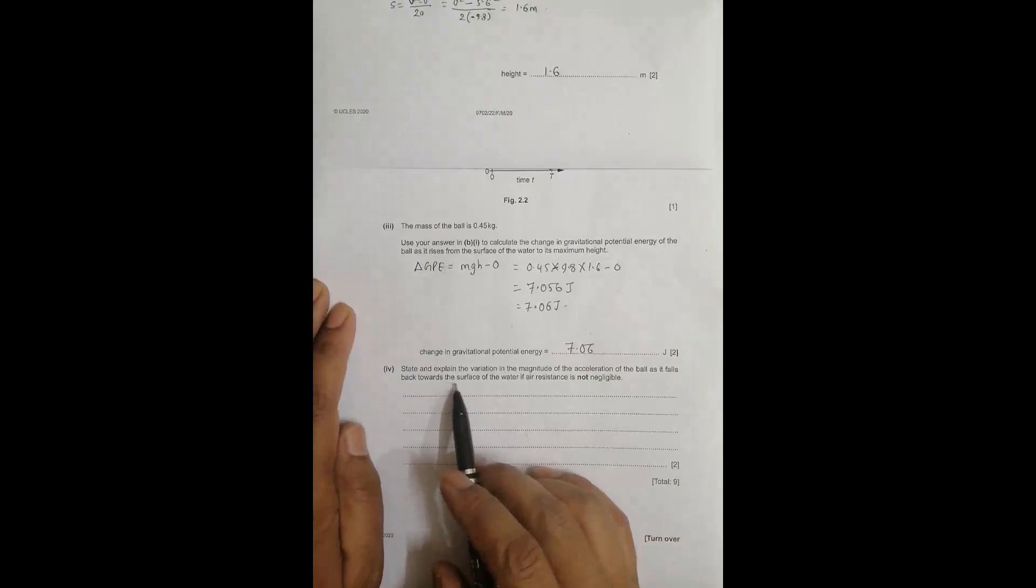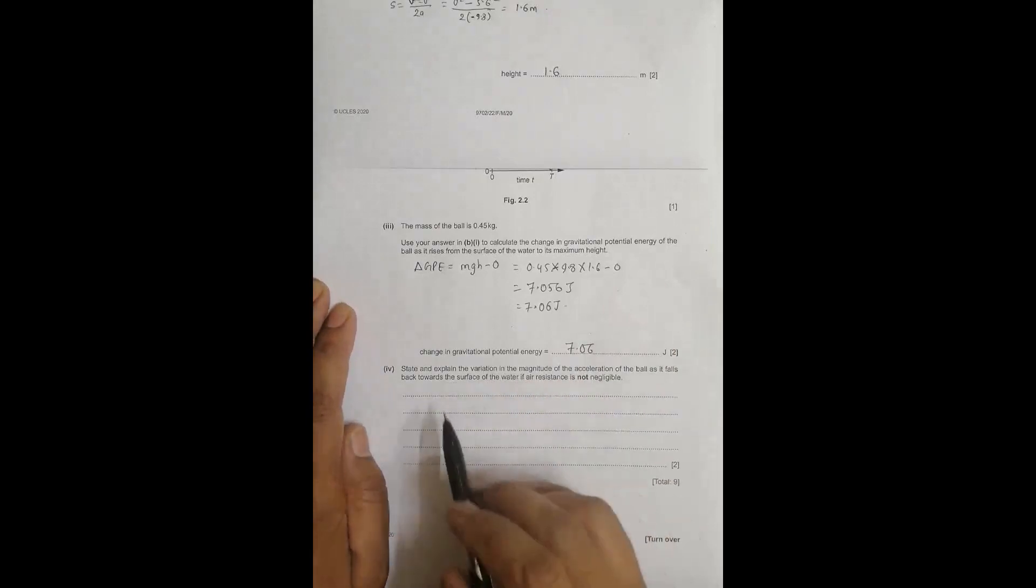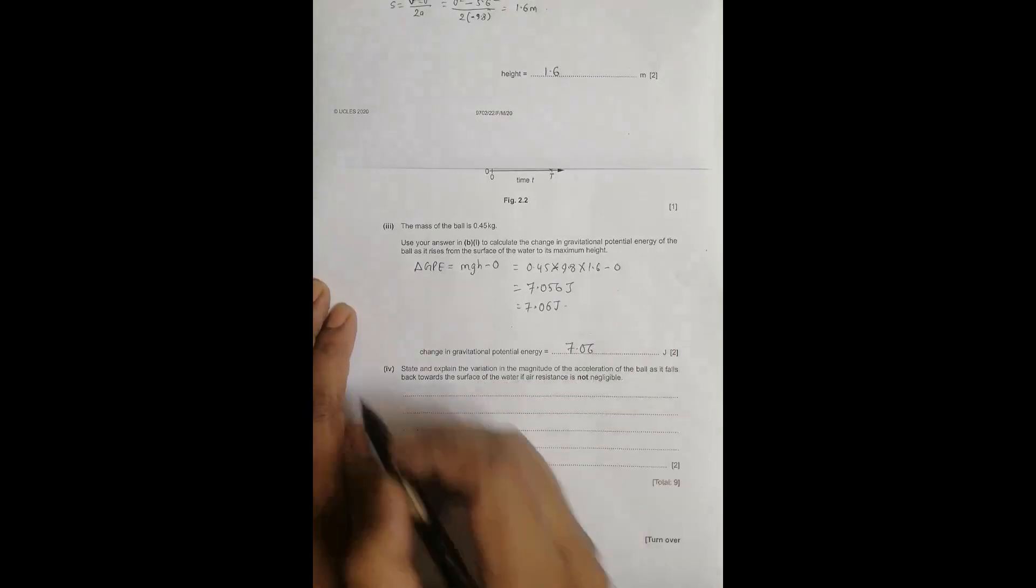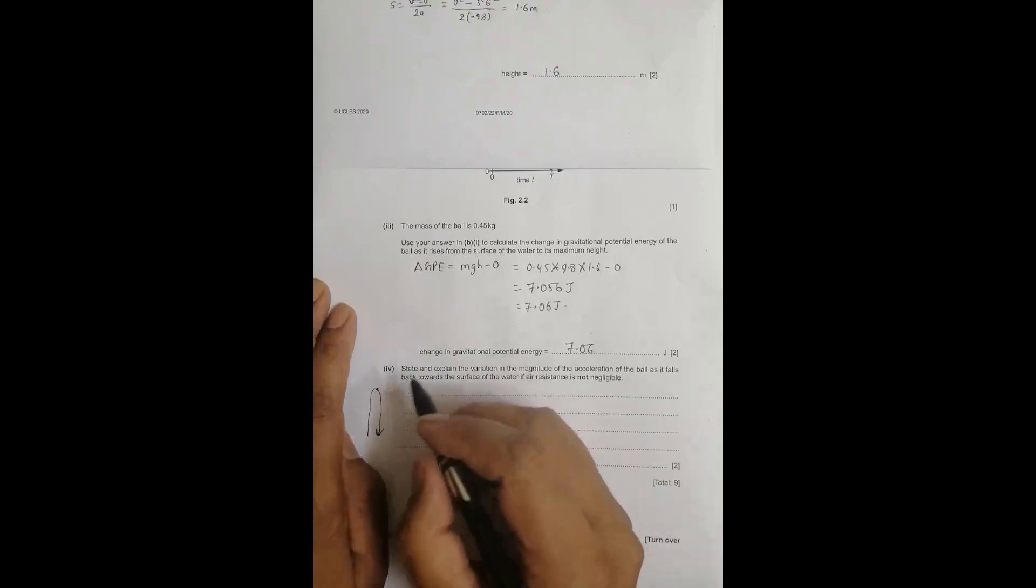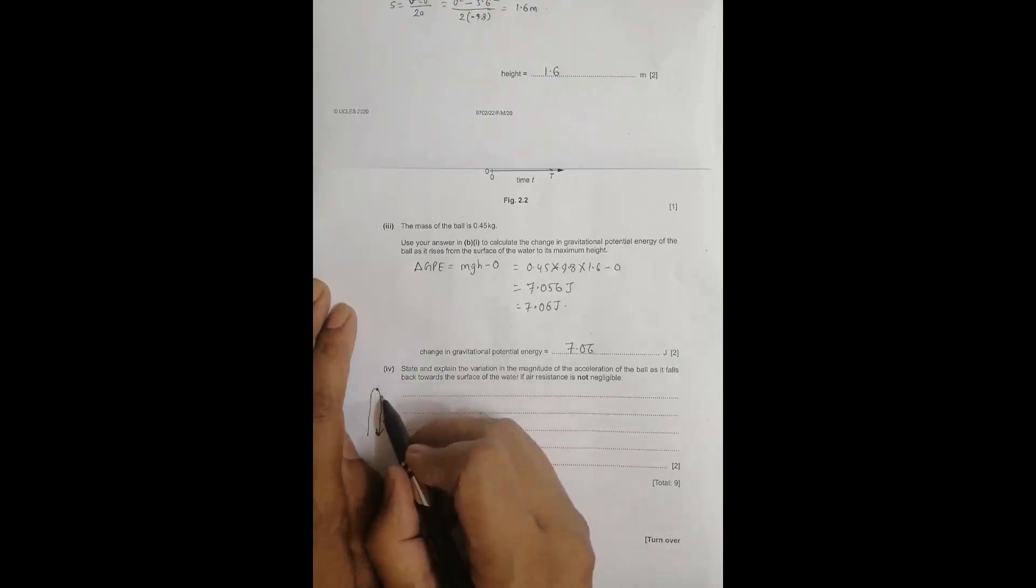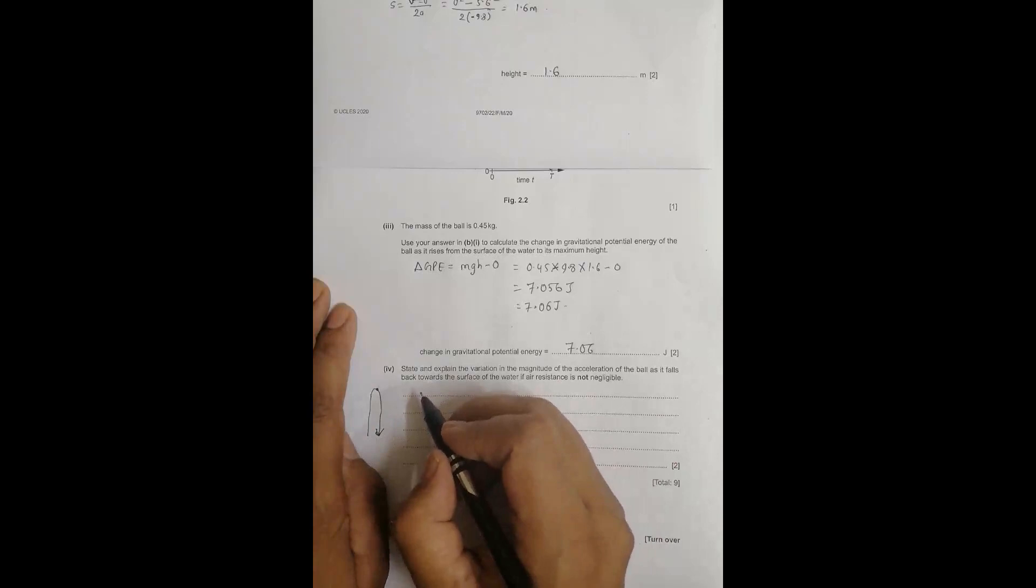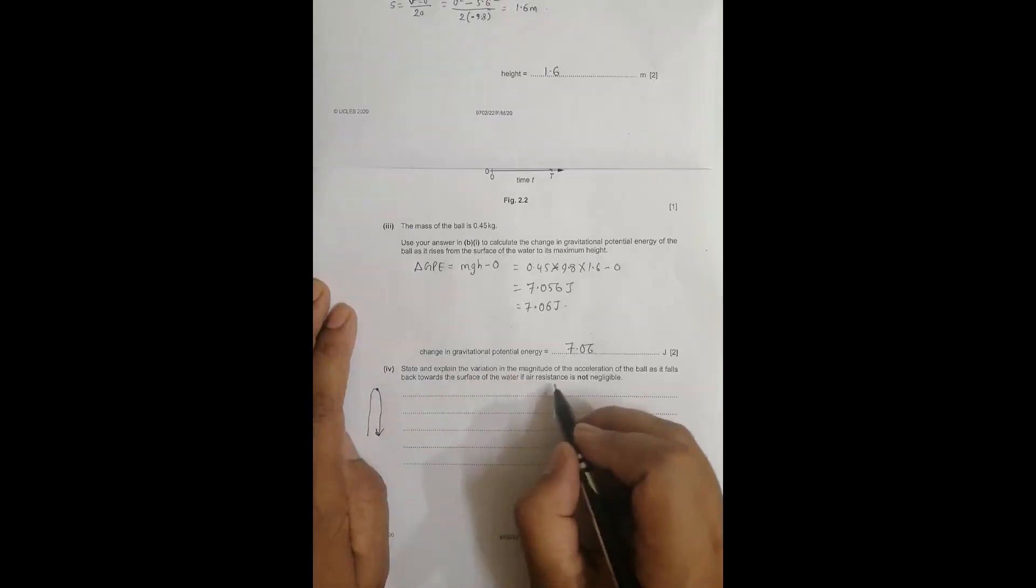The last part asks to explain the variation in magnitude of the ball's acceleration as it falls back towards the water surface if air resistance is not negligible. After climbing to the top, it falls. Initially, velocity was 0, then V starts to increase. When V increases, the opposing forces also increase. Let's consider the relation for resultant force when air resistance is not negligible.